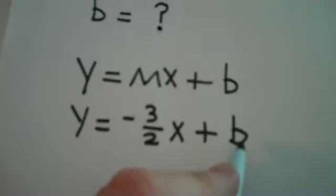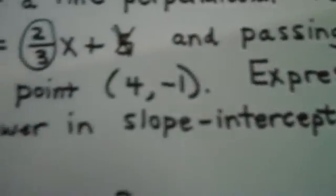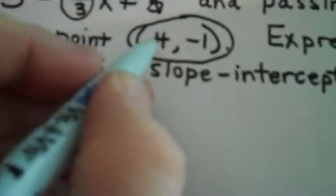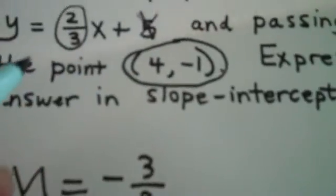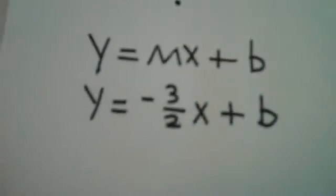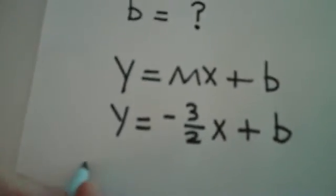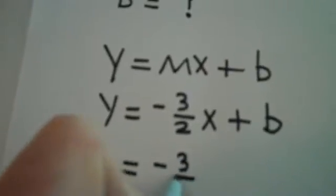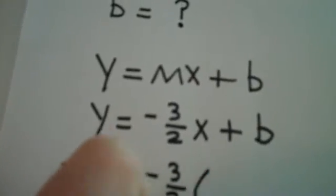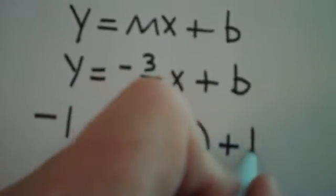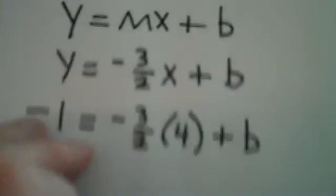So a really cool way to get it, if I take this ordered pair, which is one of many points on the line, I know that it satisfies the equation of my line, which means if I put a -1 in for y, substitute it in, and I put a 4 in for x, it makes this equation true.